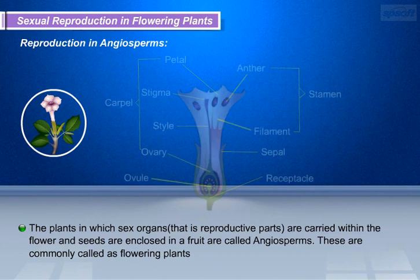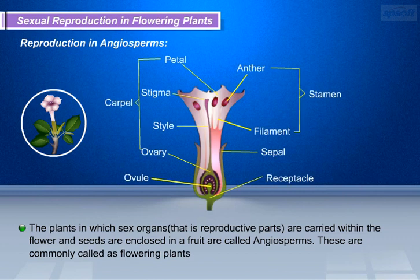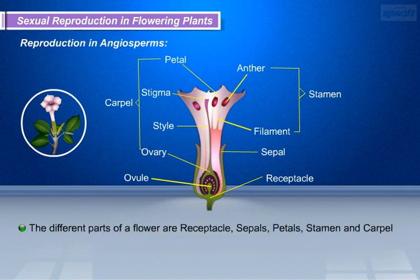Let us see the sexual method of reproduction in angiosperms. Angiosperms are flowering plants — the plants in which sex organs, i.e. reproductive parts, are carried within the flower, and seeds are enclosed in a fruit. These are commonly called flowering plants. The different parts of a flower are receptacle, sepals, petals, stamens, and carpel.